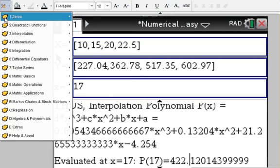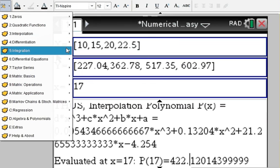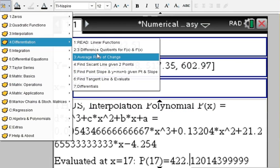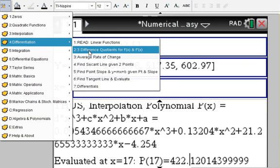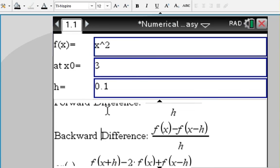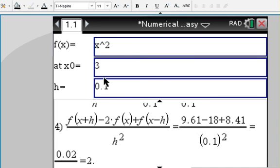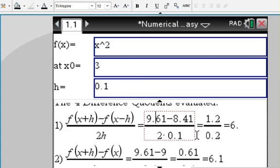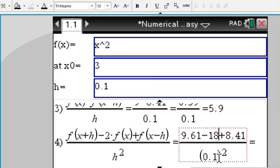Differentiation—you can do average rate of change, secant lines, etc. Let me show you the three different quotients: backward difference, central difference, forward difference. Just enter your function—say x squared—the point, and the difference h. You can see how the different difference quotients approximate your derivative, and also the second derivative is approximated right here.